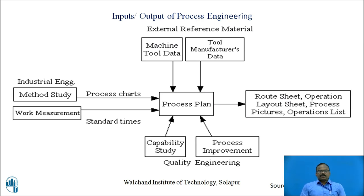These are the inputs and outputs for process engineering. The inputs are: first, Industrial Engineering; second, Quality Engineering; and third, External Reference Material. Industrial Engineering has two components: Method Study and Work Measurement. Quality Engineering has two components: Capability Study and Process Improvement. External Reference Material has two components: Machine Tool Data from the manufacturer, and Cutting Tool Manufacturer Data.